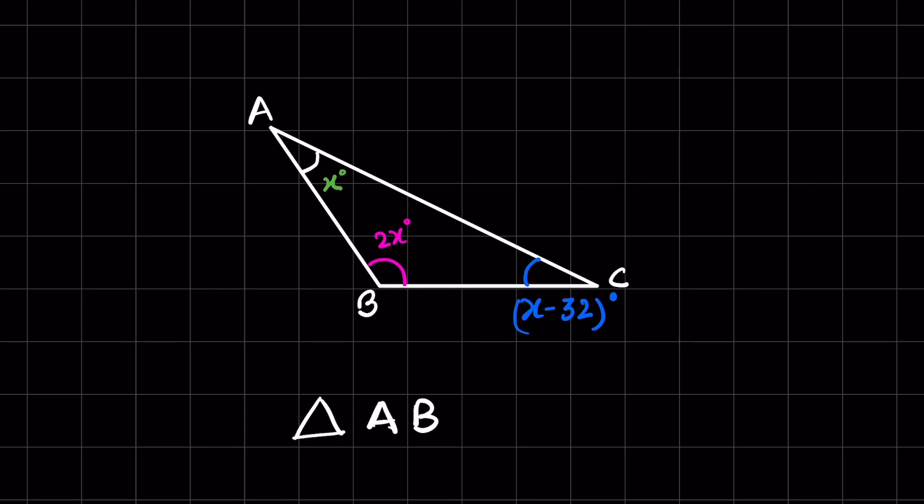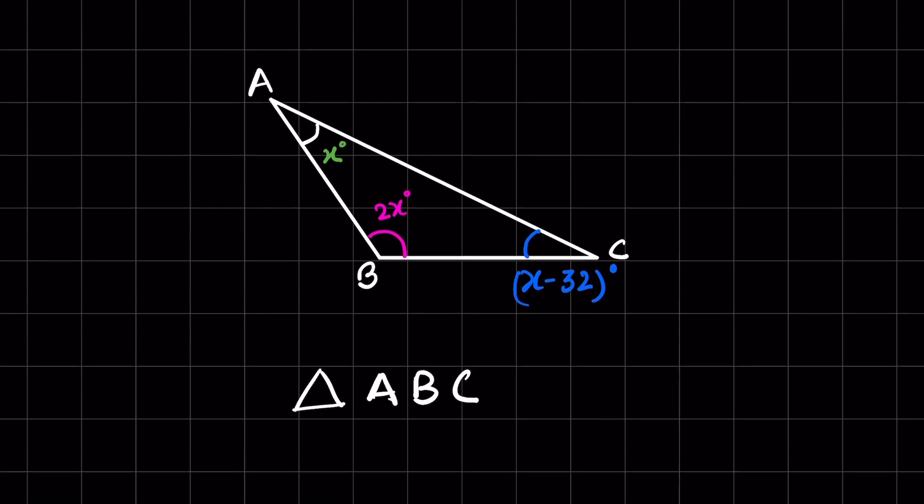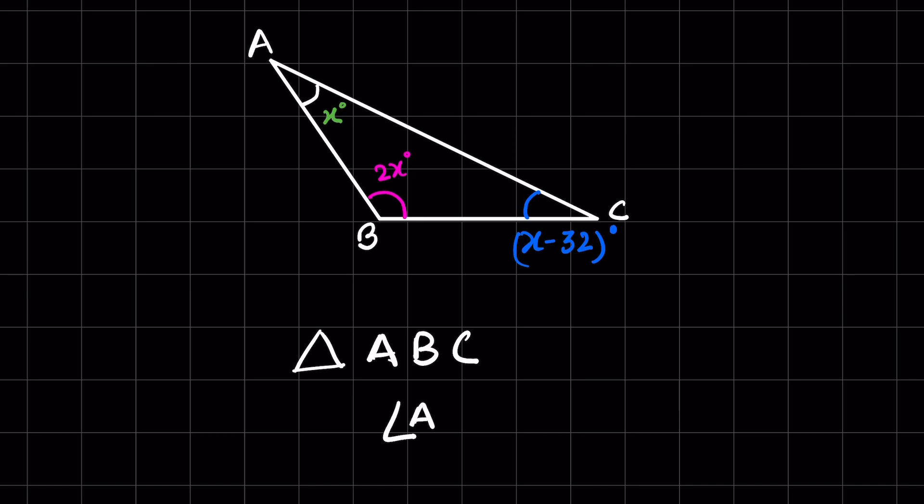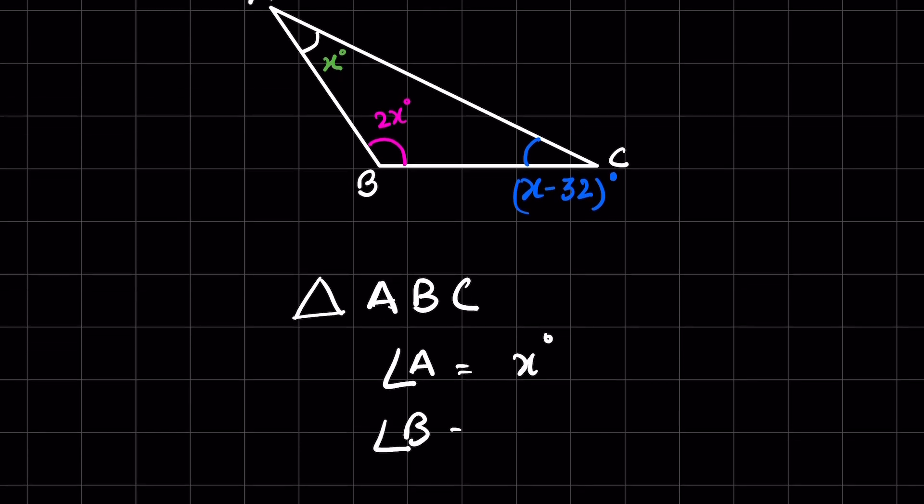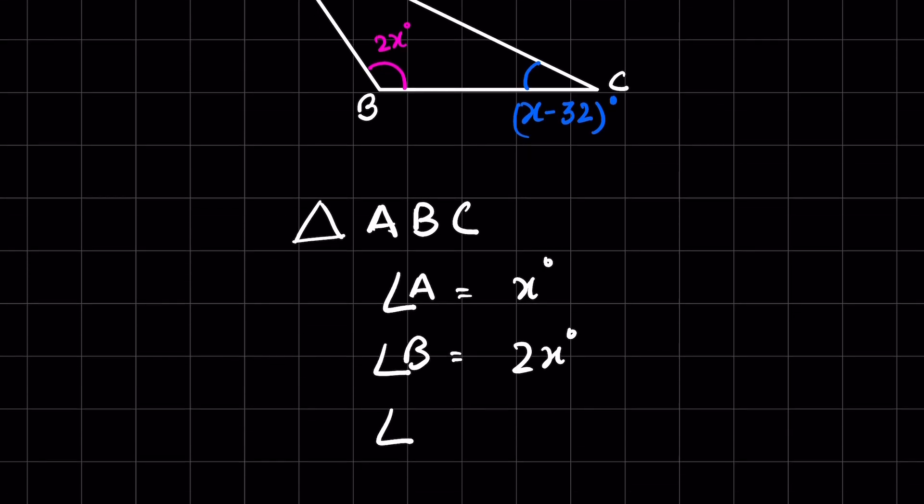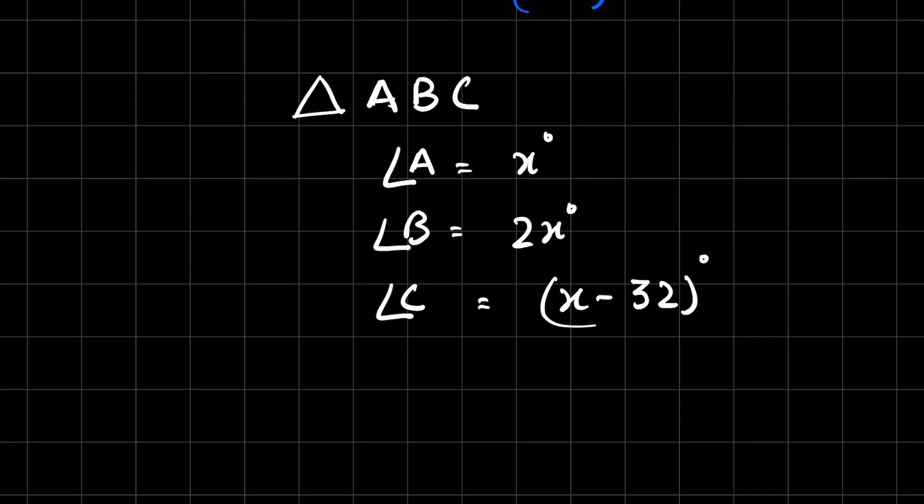This is a triangle ABC. In this triangle, angle A is x degrees, angle B is 2x degrees, and angle C is x minus 32 degrees. So we have to find the value of x.